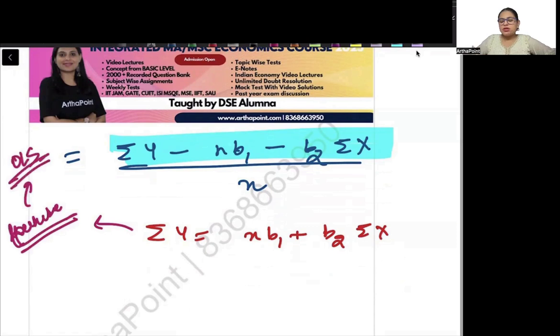Where I have derived the OLS estimators. This is my first normal equation. So from here, I can say that summation Y minus NB1 minus B2 summation X will be 0. So this will be 0.